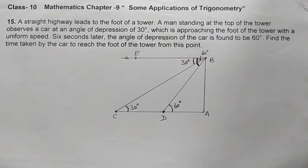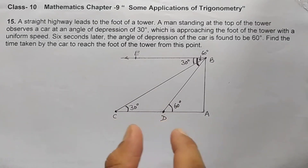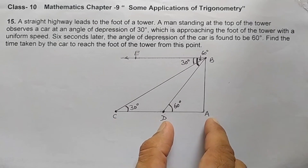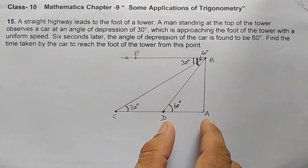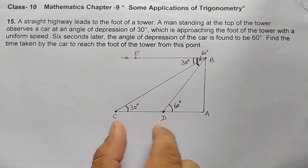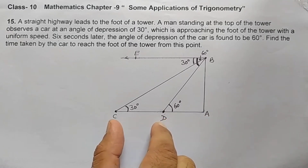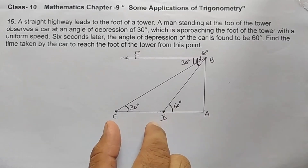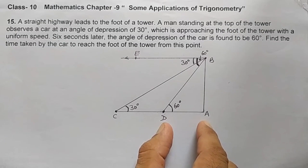What is the procedure? We will find the relation between CD and AD. For example, if CD is double of AD, then for travelling CD it takes 6 seconds, and since AD is half of CD, AD will take just 3 seconds. So our motive is to bring the relation between CD and AD. Then we will use the unitary method to find out the time.